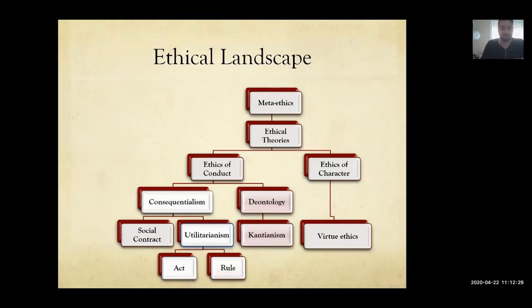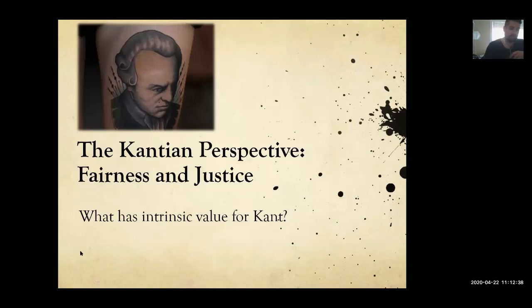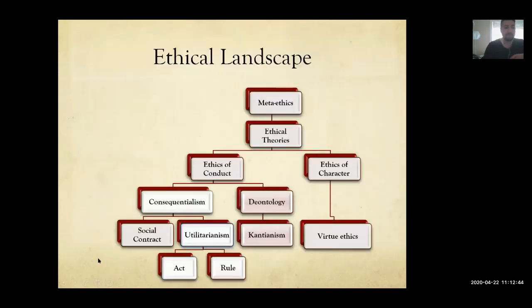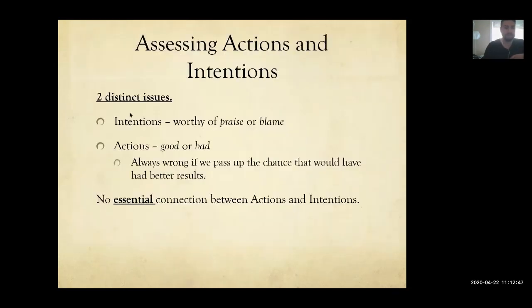So if it's not about the consequences of your actions, what is it about? It's going to be about your intentions. When we talk about deontology and judging whether something is right or wrong, Kant is going to say you have to examine the person's intentions. The actions and the consequences of the actions aren't really what you should be examining when trying to determine whether somebody is right or wrong.